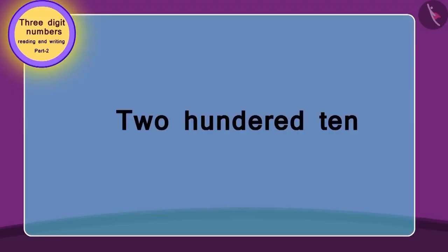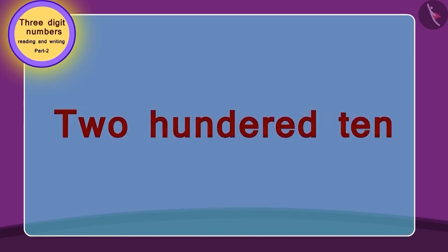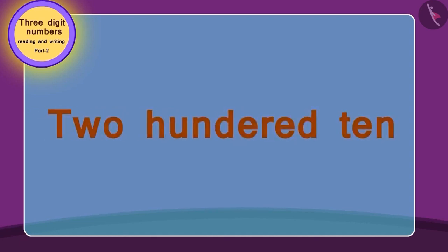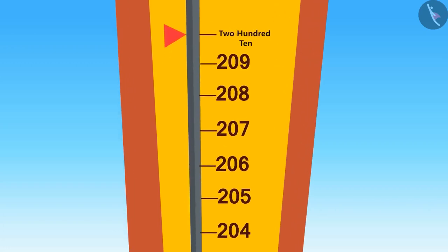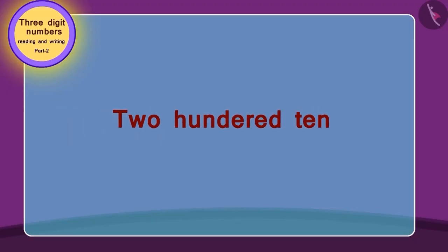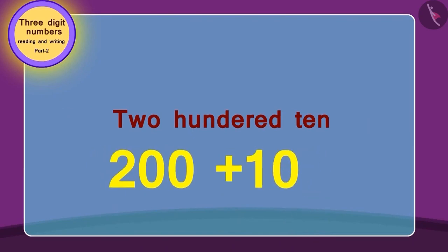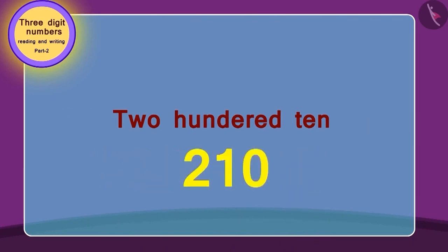Can you write this number in digits? The process of writing in words is exactly the opposite. Write with me: 2 hundreds, 10. This is 10 above 200, so this number is 210. We will add 10 to 200 to write this. In this way, our number 210 is ready.